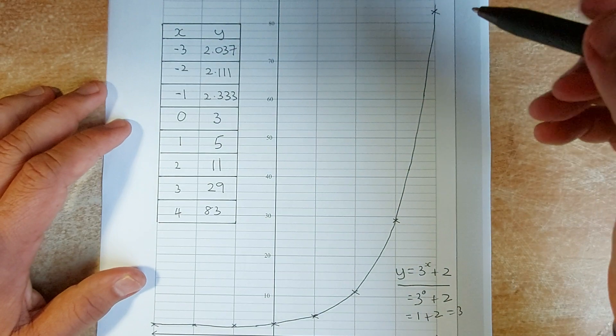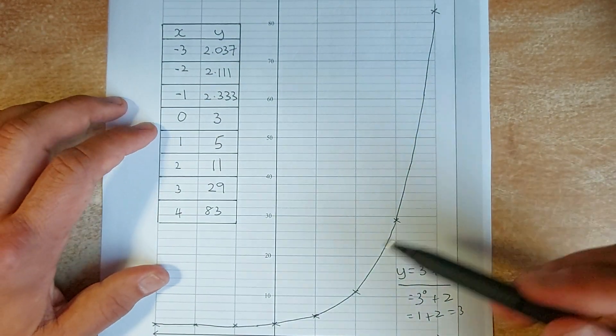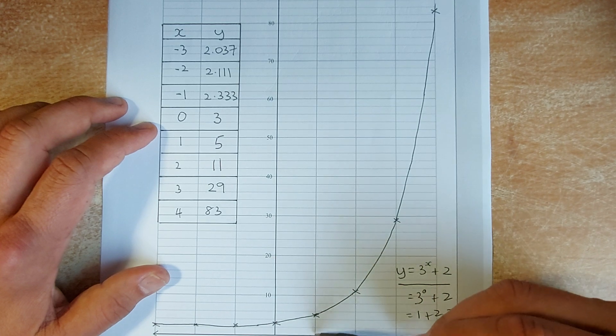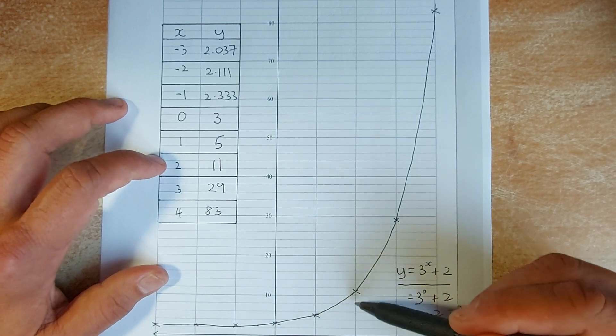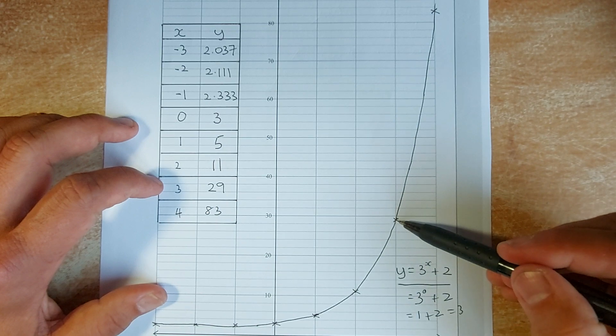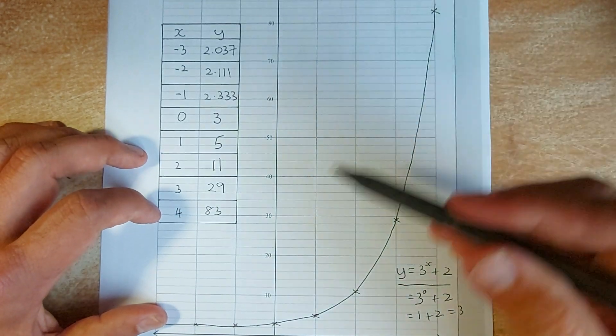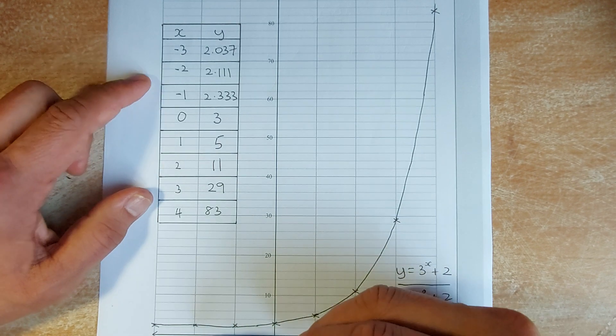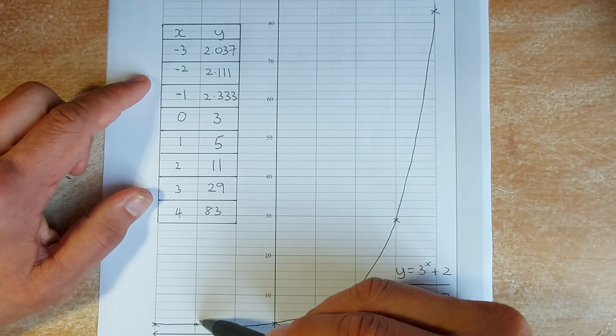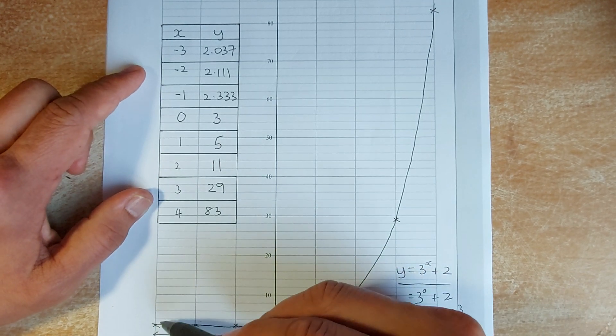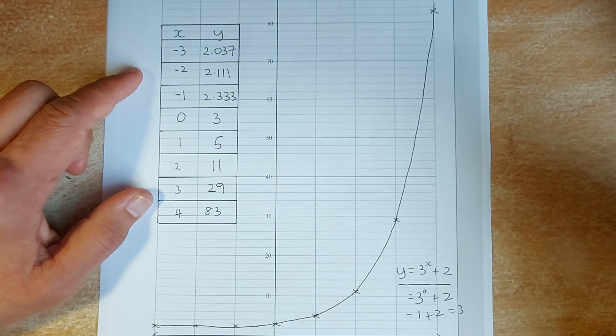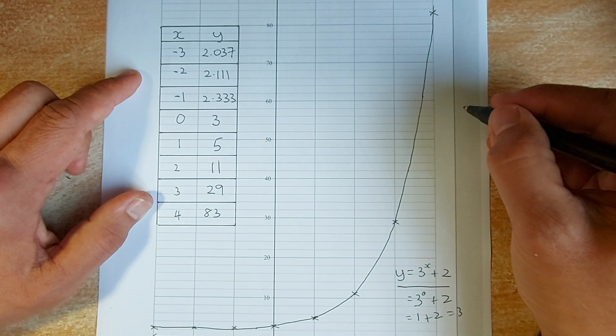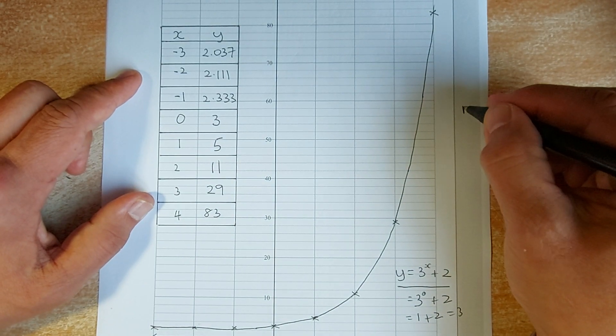Once you have the point, you are going to plot that point onto the graph. So, for example, 0, 3 is going to be here, 0 x, 0 y, 3, 1, 5, 2, 11, 3, 29, 4, 83, and similarly, minus 1 is going to be 2.333, minus 2 is going to be 2.111, and minus 3 is going to be 2.037. Once you have done that, draw that graph, and that will give you a merit in this paper. Not too bad, eh?